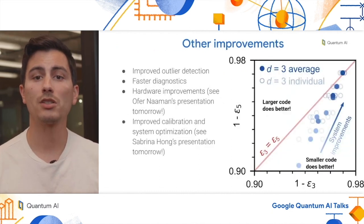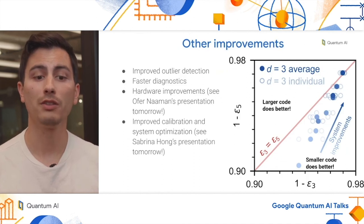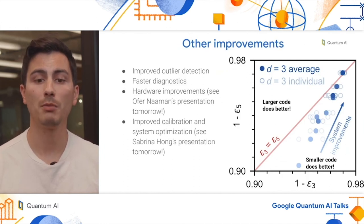Now these are only some of the improvements that we made along the way, and I'd like to highlight some other ones that we made. This includes improved outlier detection, faster diagnostics, hardware improvements, and improved calibration and system optimization.